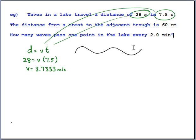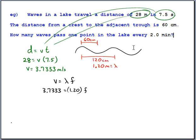You measured 60 centimeters from a crest to a trough — but that's only half a wavelength, not a full one. Crest to crest gives a full wavelength of 1.2 meters, so lambda = 1.2 m. Now using V = λf, we have V = 3.7 and lambda = 1.2, and solving for frequency gives approximately 3.11 hertz.